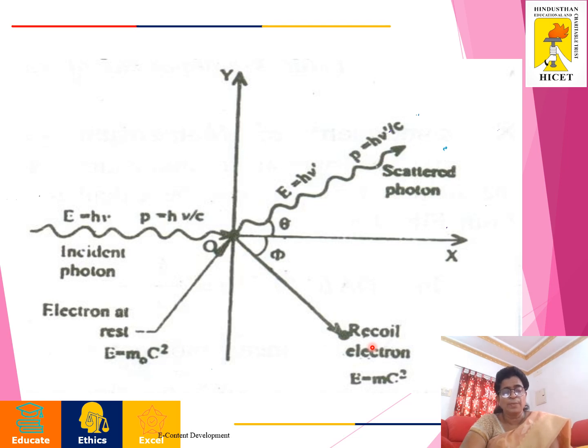In Compton scattering, the collision between the photon and an electron is considered. Then by applying the law of conservation of energy and momentum, the expression for Compton wavelength is derived.